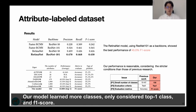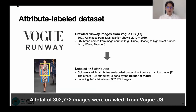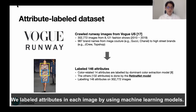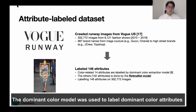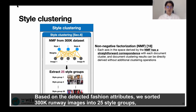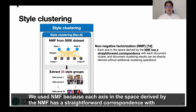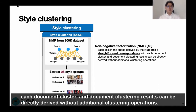We crawled fashion images to build the large-scale attribute dataset. A total of 302,772 images were crawled from Vogue US. We labeled attributes in each image using machine learning models: the dominant color model was used to label dominant color attributes, and the RetinaNet model was used to label all other attributes. We now have 300K images with 146 attributes. Based on the detected fashion attributes, we sorted the 300K images into 25 style groups using non-negative matrix factorization, NMF. We used NMF because each axis in the NMF-derived space has a straightforward correspondence with each document cluster, and clustering results can be directly derived without additional operations.